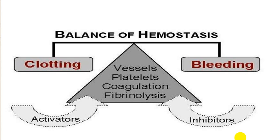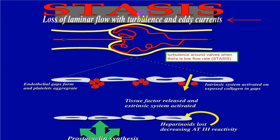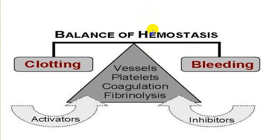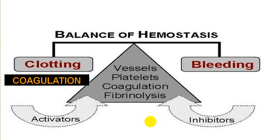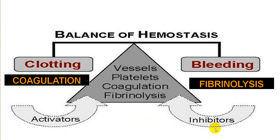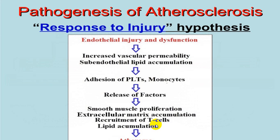Stasis can occur on the arterial or venous side. If there is an imbalance between substances that activate clotting and those that inhibit it — if activating factors increase and inhibitors decrease — clot formation occurs. Coagulation takes place; if fibrinolysis is activated excessively, bleeding occurs instead. In DIC, both coagulation and fibrinolysis are activated simultaneously — a classical example of this imbalance.